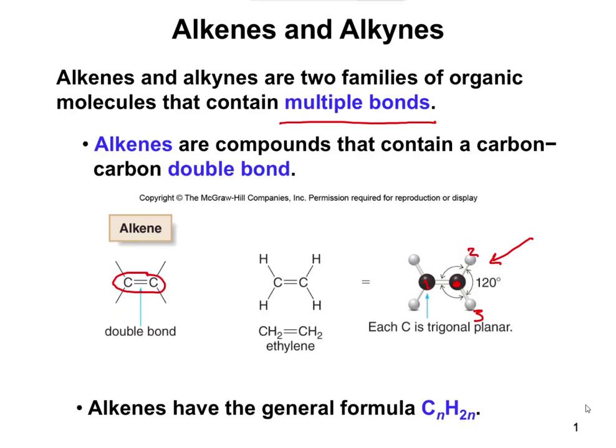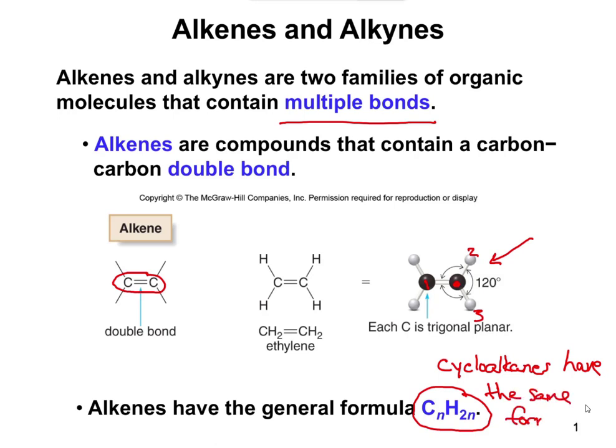Alkenes are going to have the formula CnH2n, which, as you recall, was the exact same formula that we had for a cycloalkane. So cycloalkanes have the same formula. The importance of this is that you can't just look at a formula like C4H8 and say it's an alkene or a cycloalkane — we have to be able to name the molecules and look at the structures to distinguish between them.